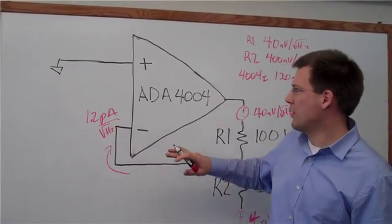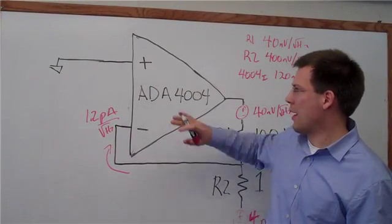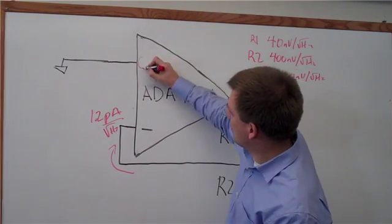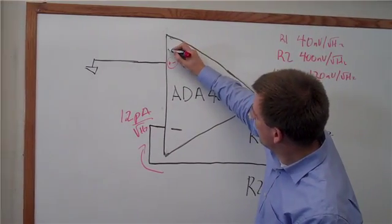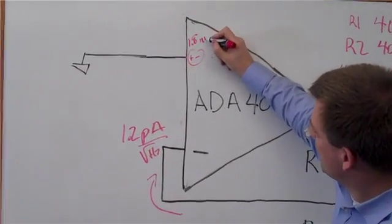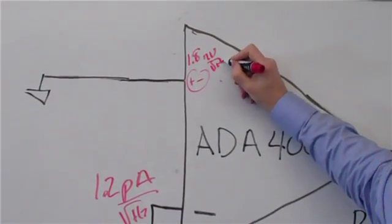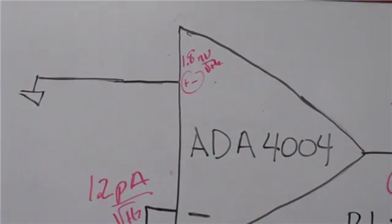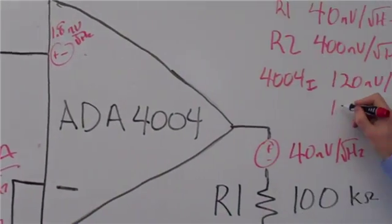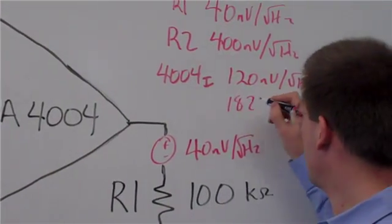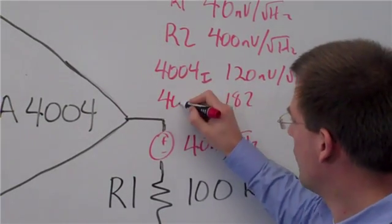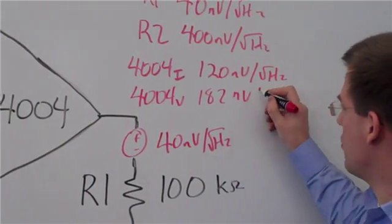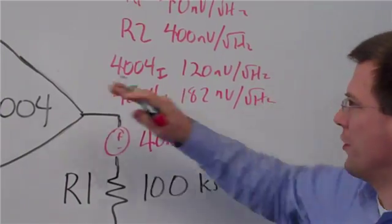The last thing we figure out is the voltage noise of the amplifier. We have a voltage source here that's 1.8 nanovolts per root hertz. That just comes from the data sheet. We multiply that by 101. I think we get something like 182, and that's the contribution from the voltage noise.